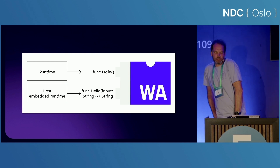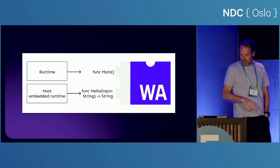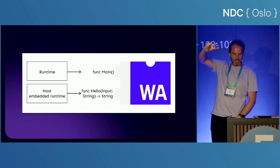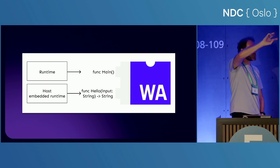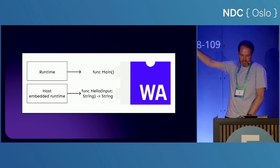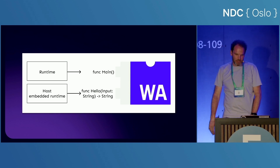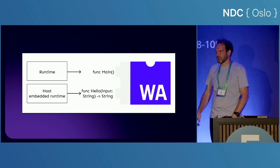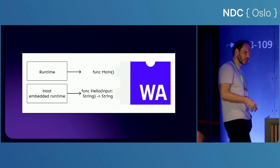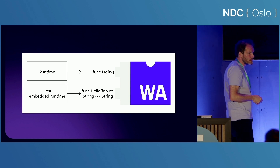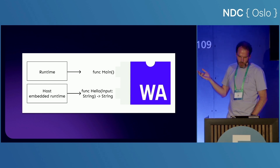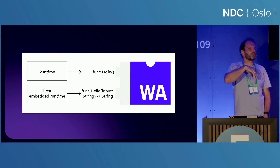There are two ways you can use these components. On the right-hand side you have the WebAssembly component, and the small Lego pieces attached to it represent two exports — for example, a main function, or a function called 'hello' that takes a string and returns a string. If you use a WebAssembly runtime directly, it will look for certain conventions such as a main function and run that directly. If you want to call a specific function like 'hello' exposed from the WebAssembly, you typically build your own host.